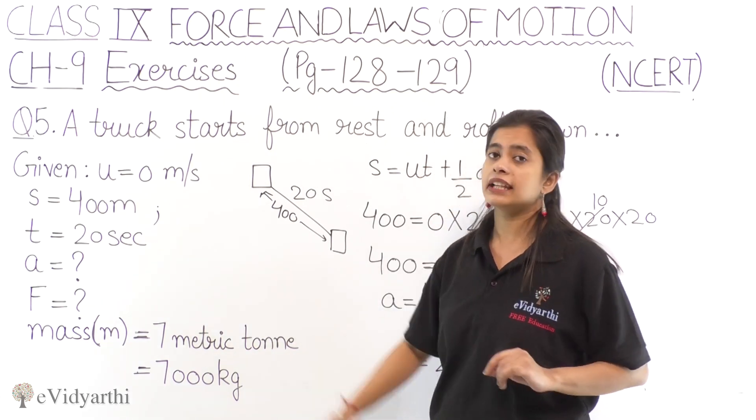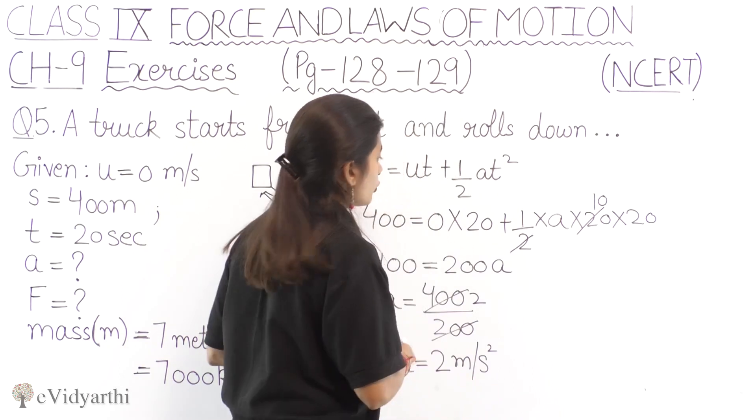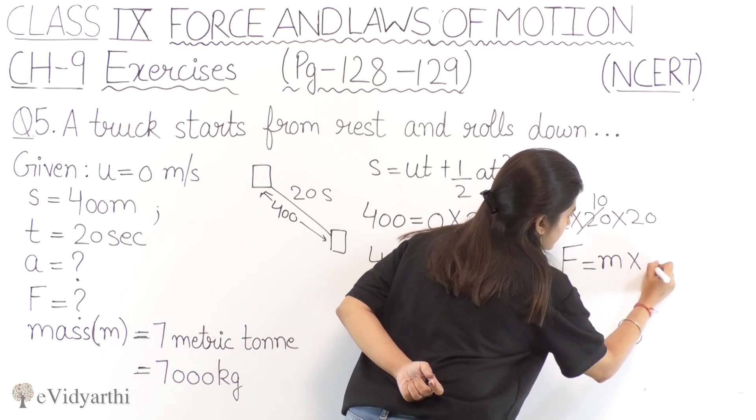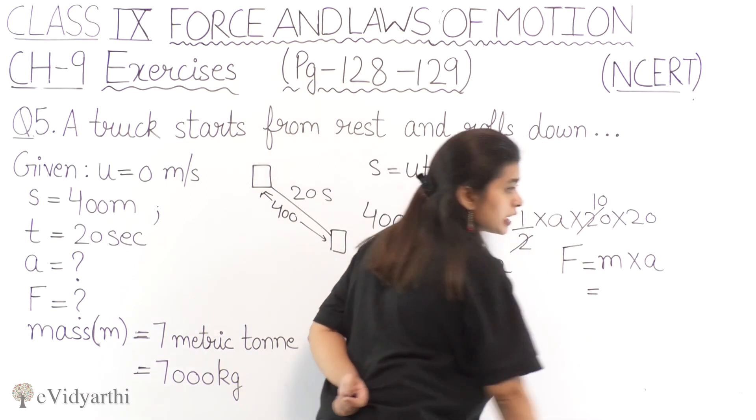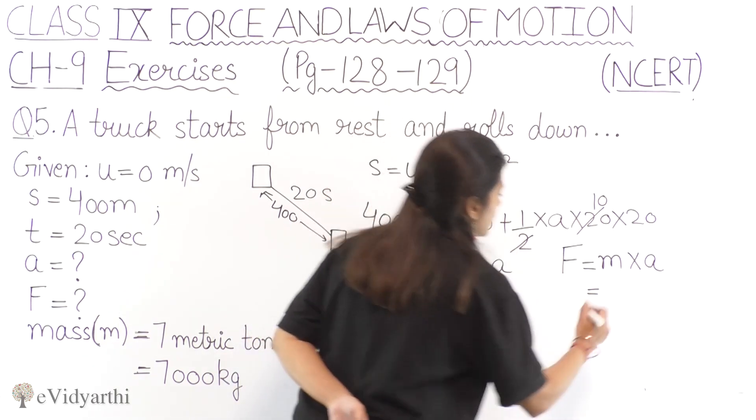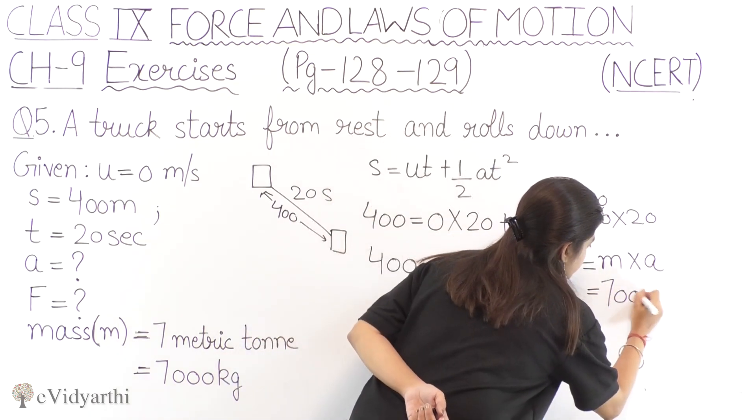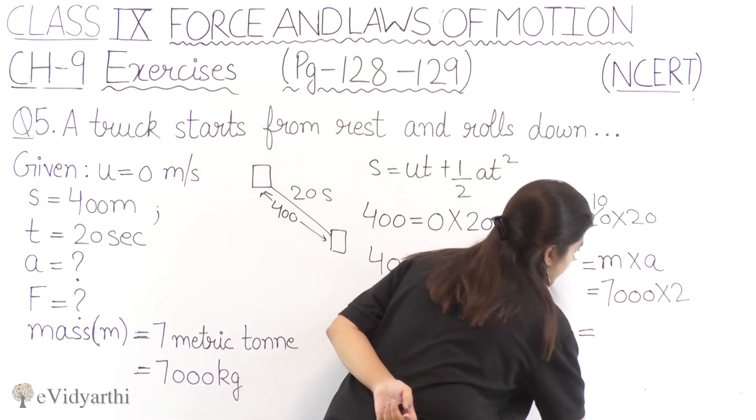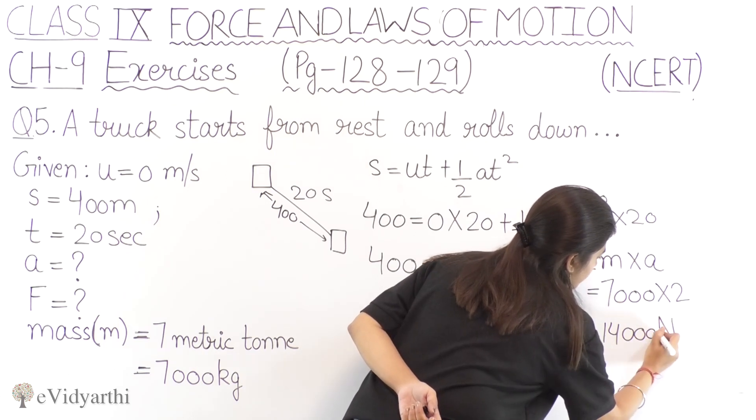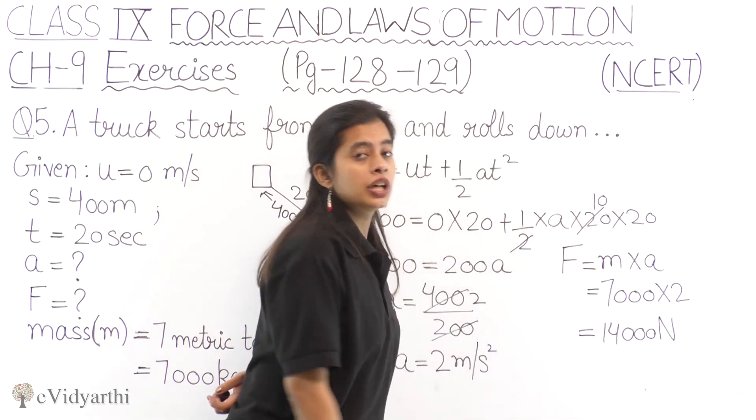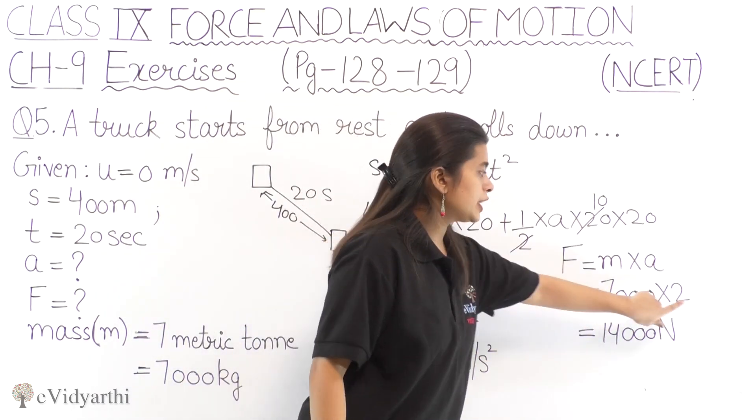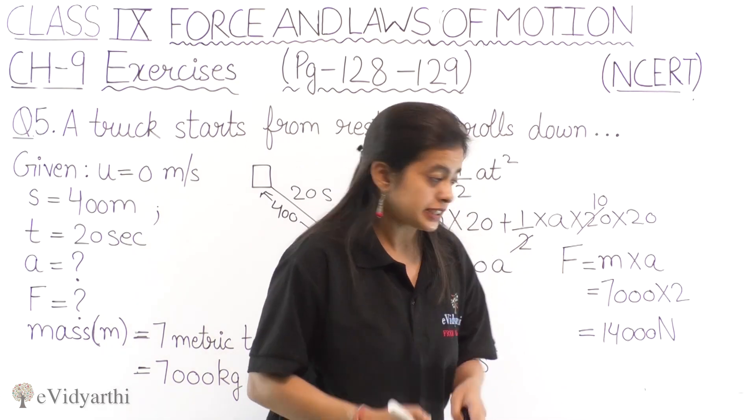So we have found out the acceleration, half question is done. But they have also asked us how much force is applied. So force formula we know, force equals mass into acceleration. So acceleration we have found out, plus mass we have given that is 7000 kg. So here we will multiply, and we will get 14,000 newtons. Why newtons? Because our force SI unit is newtons, which comes from kg and meter per second square combination.